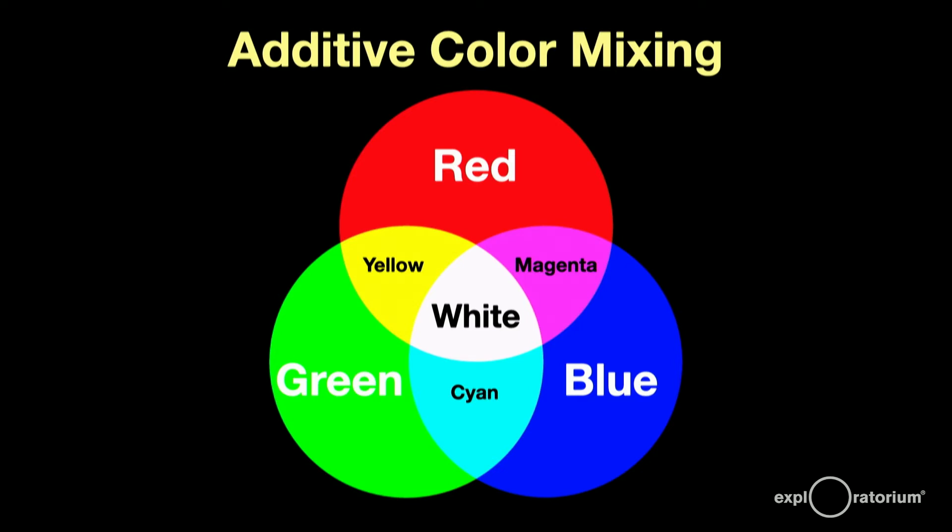Colors opposite each other—red and cyan, green and magenta, blue and yellow—are called complementary colors. When you add complementary colors, you get white.